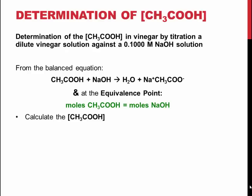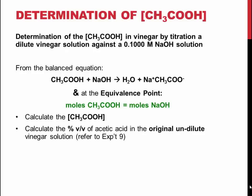Therefore, using the volume of sodium hydroxide used during the titration, the concentration of acetic acid can be calculated, as you have seen in previous labs. The percent by volume of acetic acid in vinegar can also be calculated, as you have seen in experiment 9.